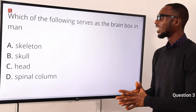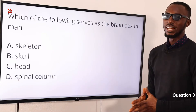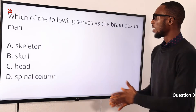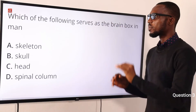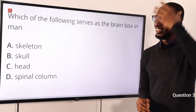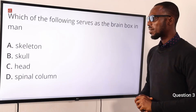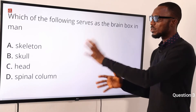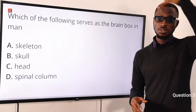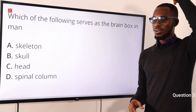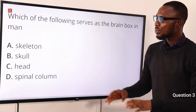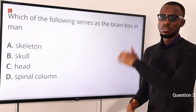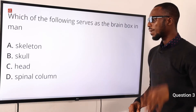Question 3. Which of the following cells has the brain box in man? When you talk about brain box, that means something providing a kind of housing or casing. In this context, we are talking about the brain — what protects the brain? That is the skull. Head is less of a biological term in this context; head just refers to the upper part. Looking at option D, the spinal column — that's around the backbone — connects the brain to every other part of the body.